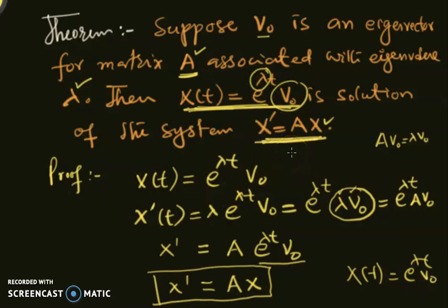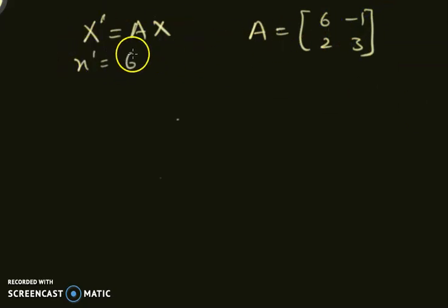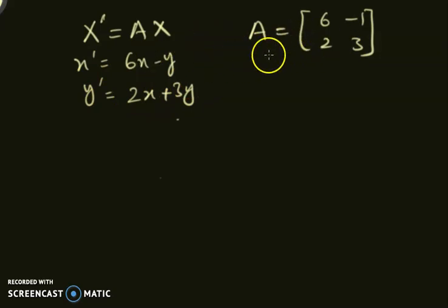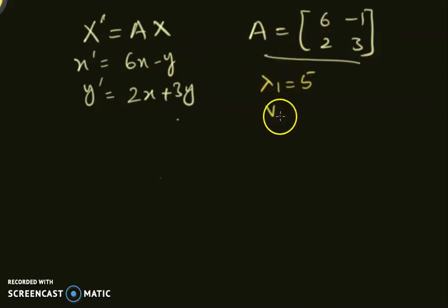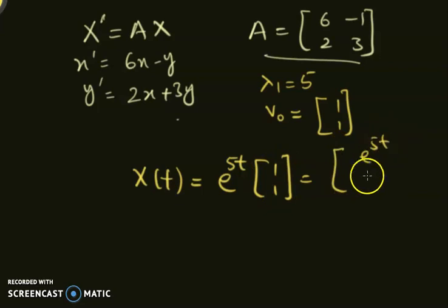Let's take an example. Consider the system x' = Ax where A = [[6, -1], [2, 3]]. This gives x' = 6x - y and y' = 2x + 3y. One eigenvalue of A is lambda = 5 with corresponding eigenvector [1, 1]. So x(t) = e^(5t) · [1, 1], which means x(t) = e^(5t) and y(t) = e^(5t), must be a solution.